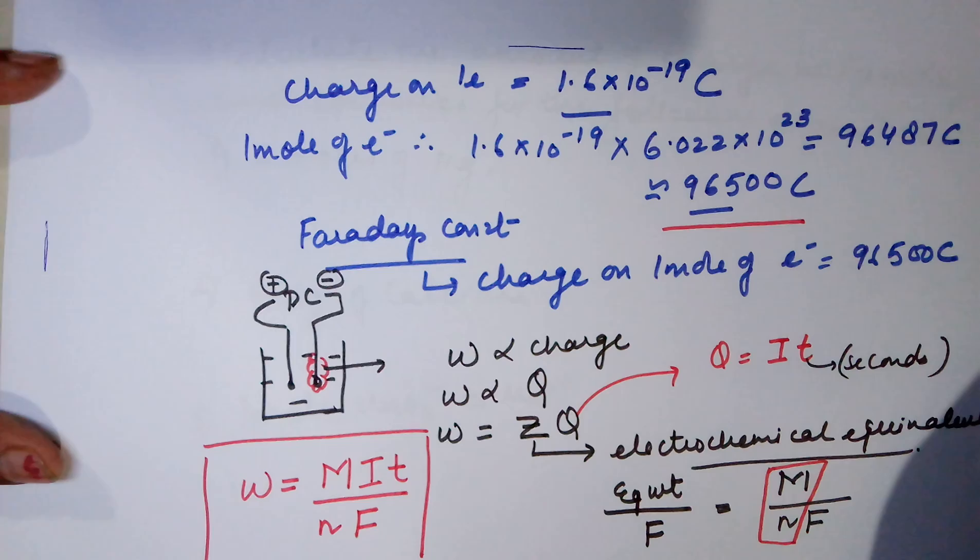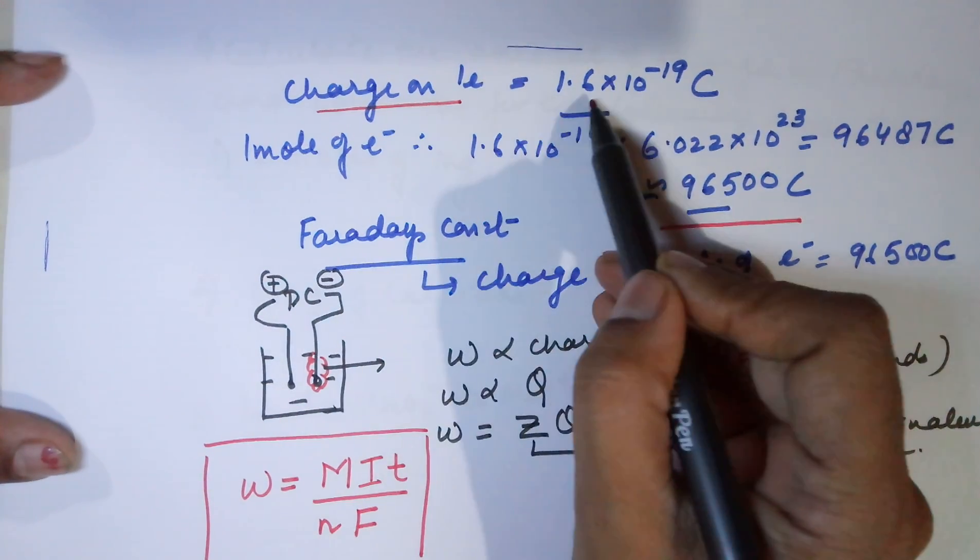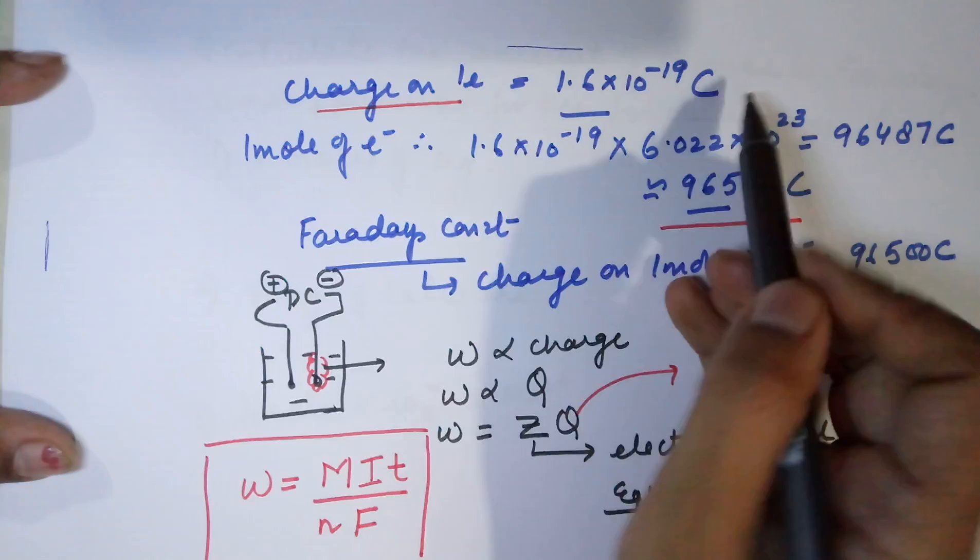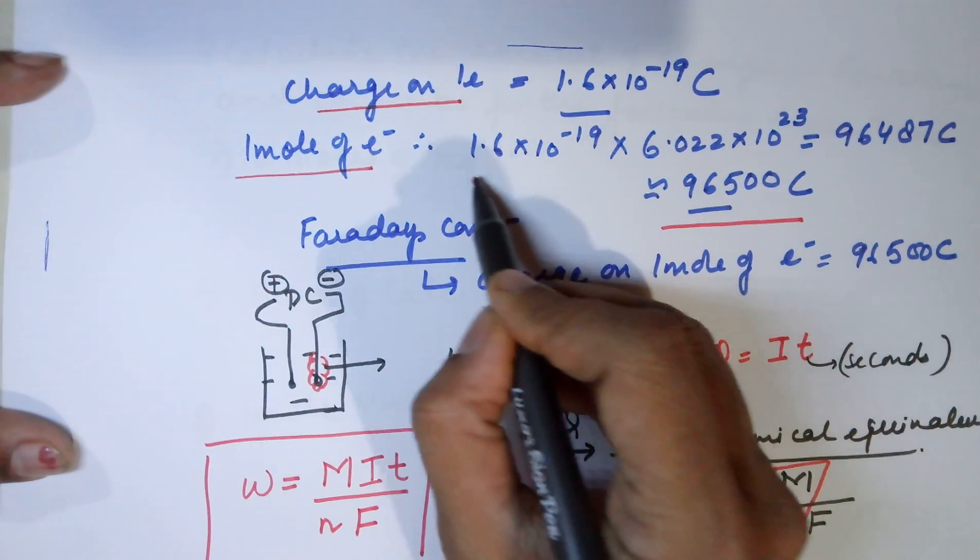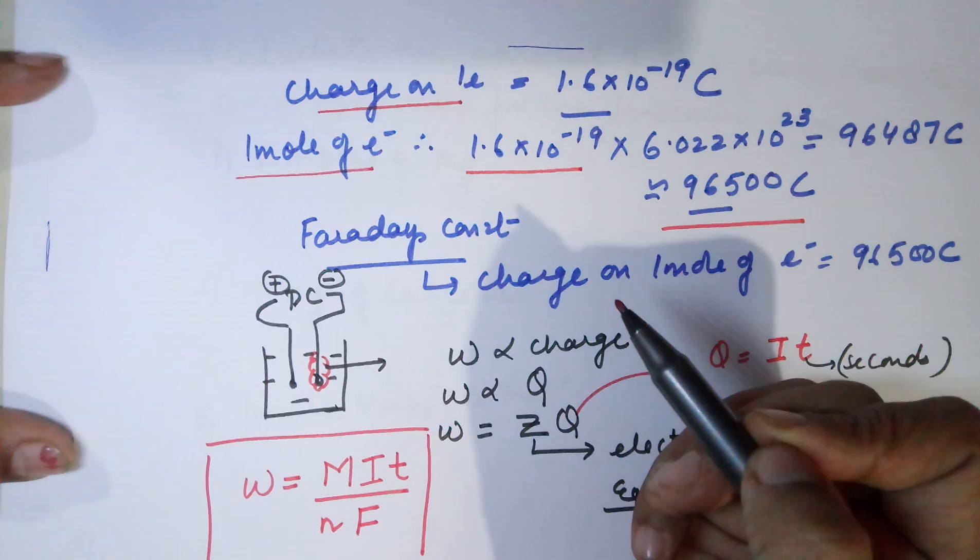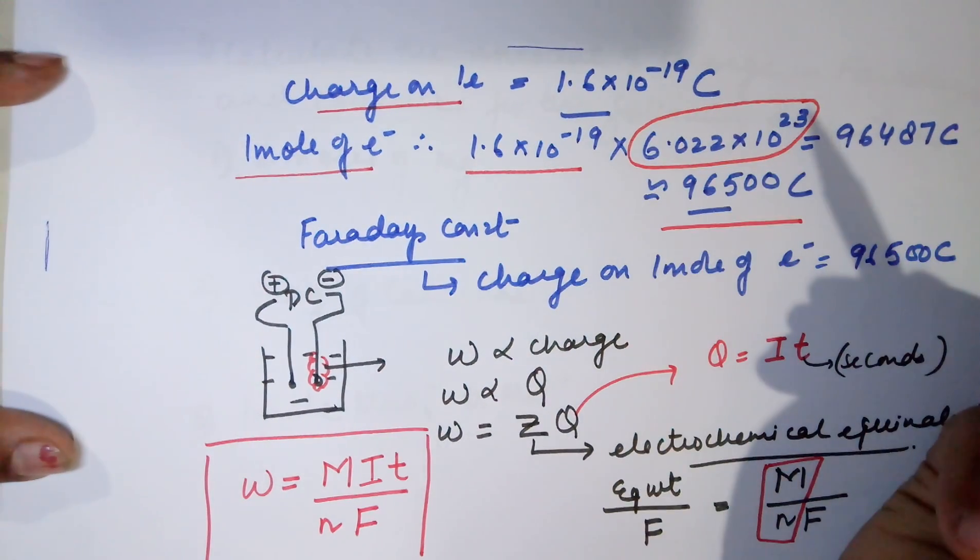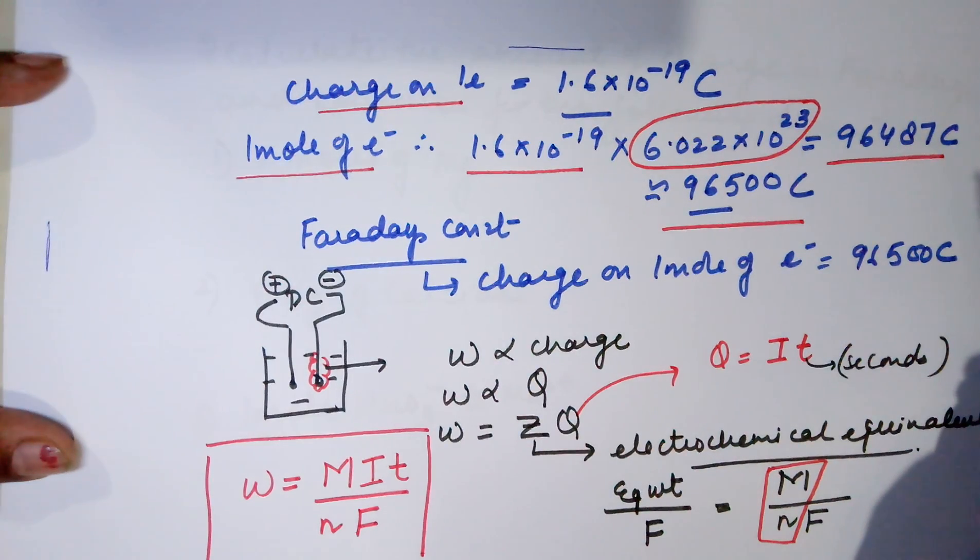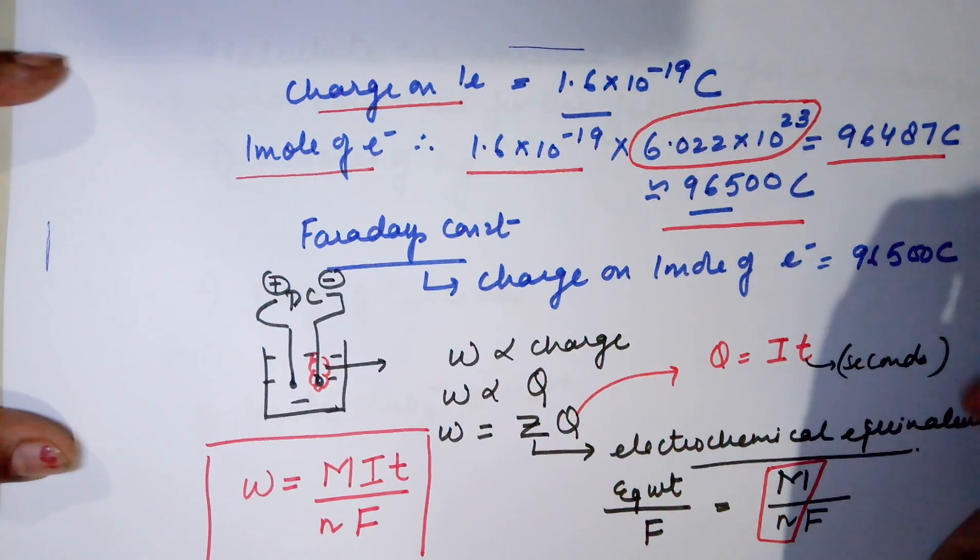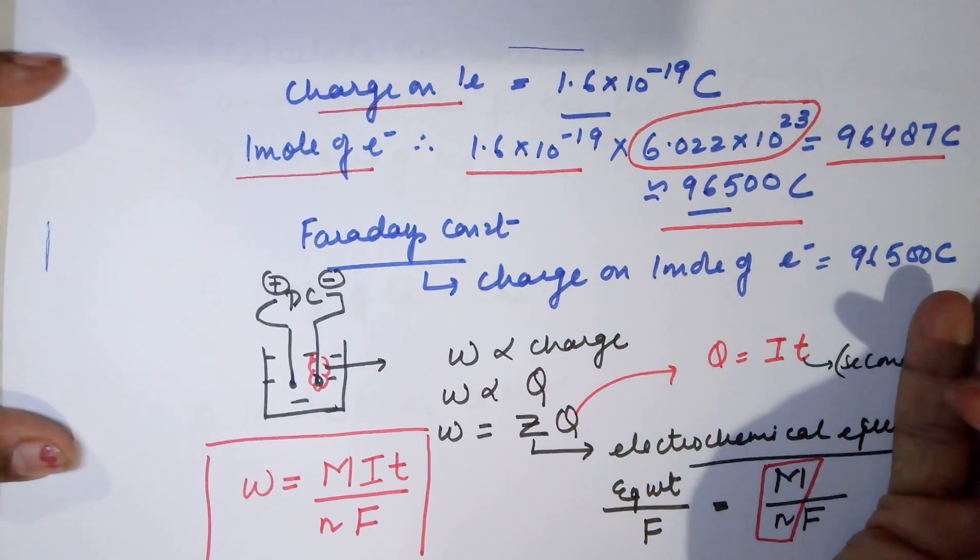Now let me revamp quickly what we have done for Faraday's first law. Charge on an electron is 1.6 × 10^-19 coulombs. Therefore, if you want 1 mole of electrons, the charge automatically becomes 1.6 × 10^-19 multiplied by Avogadro's number. However, this value actually comes out to be 96487 coulombs but we round it off to 96500 as the accepted value.